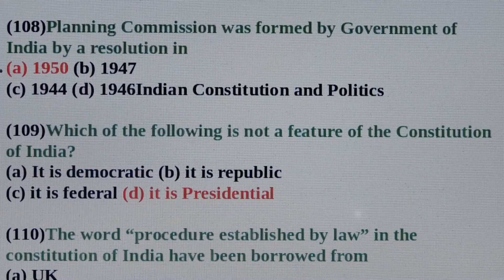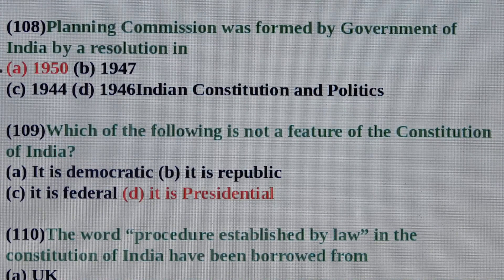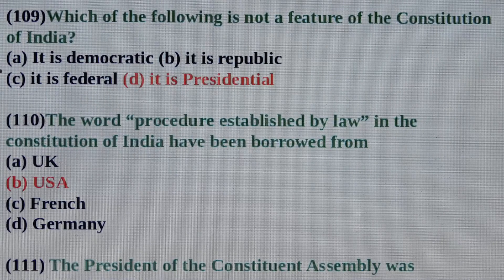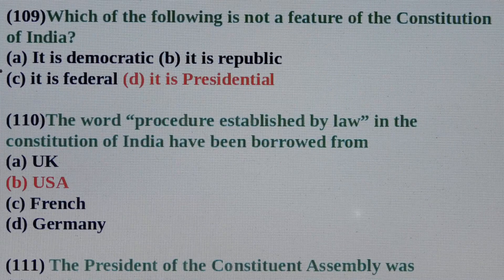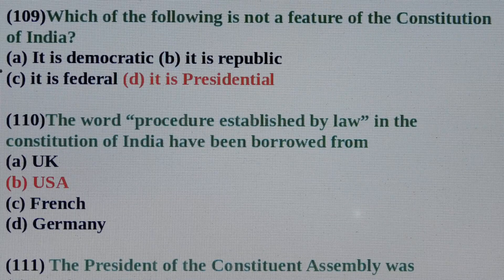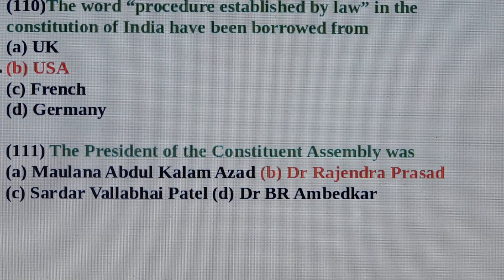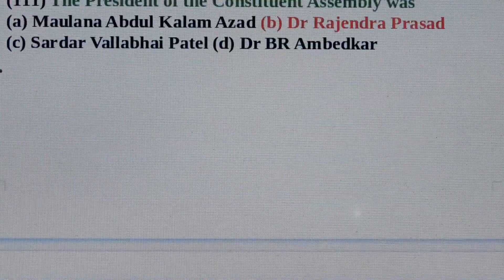Question No. 109: Which of the following is not a feature of the constitution of India? Answer is Option D: It is Presidential. Question No. 110: The word 'procedures established by law' in the constitution of India have been borrowed from? Answer is Option B: USA. Question No. 111: The president of the constituent assembly was? Answer is Option B: Dr. Rajendra Prasad.